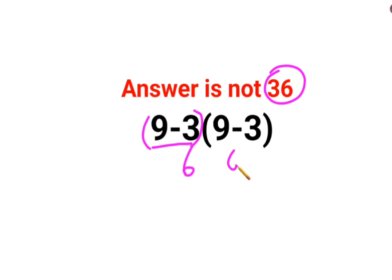So here we get 6 and here we get 6. No sign means it is multiplication. Answer is supposed to be 36. But unfortunately, the actual question didn't have a bracket.